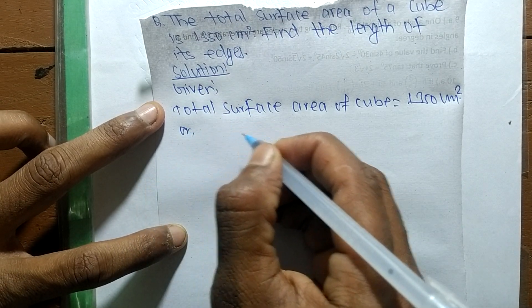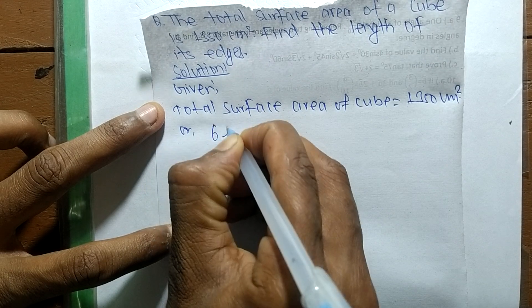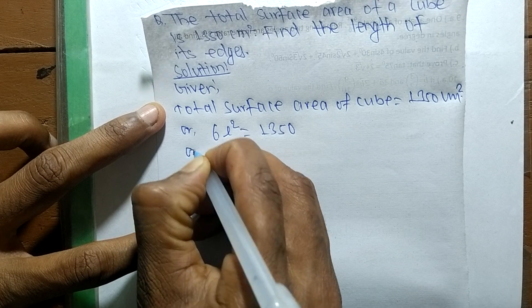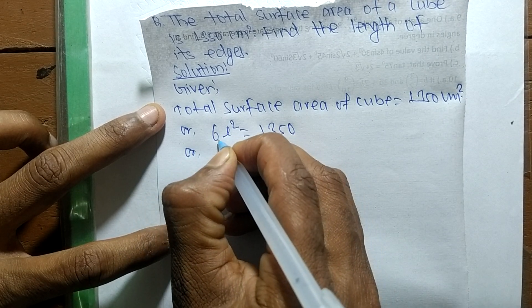So 6L² is equal to 1350. Now 6 here is in multiplication, moving to opposite side it becomes division.